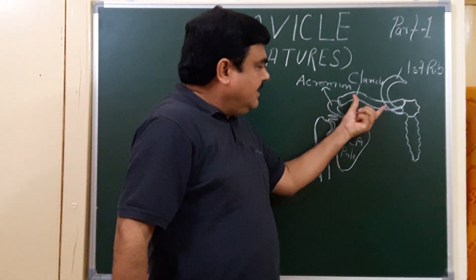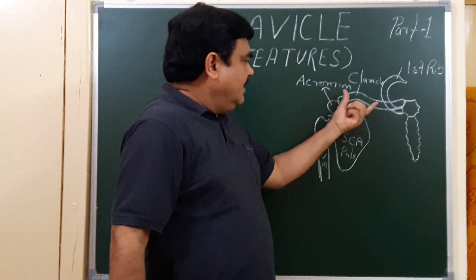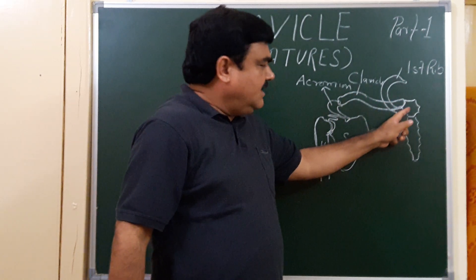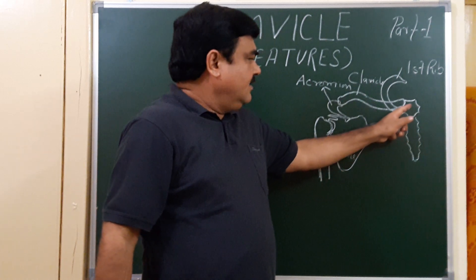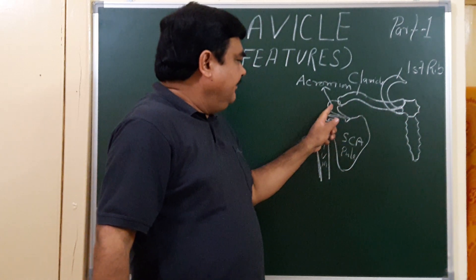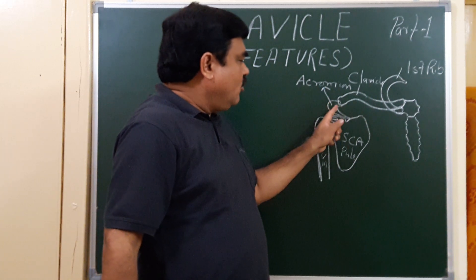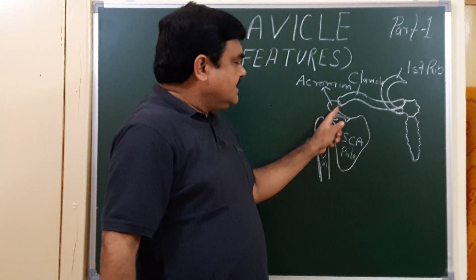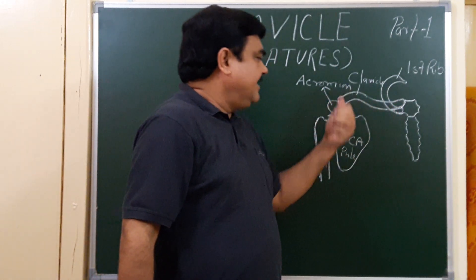This is the right side of the clavicle. This clavicle is medially attached with the manubrium sterni and laterally attached with the acromion process of the scapula. So this is the lateral end, this is the medial end, and this is the shaft.